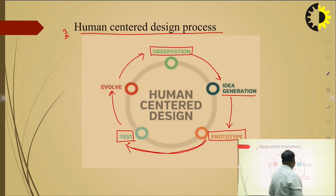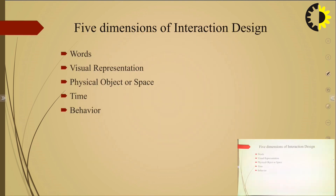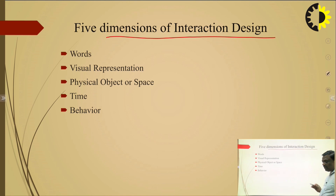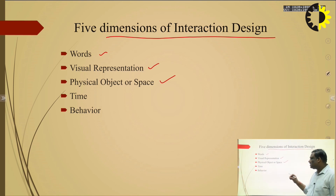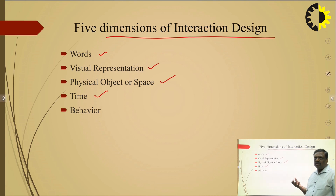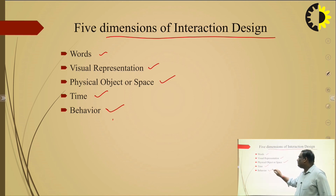These are the main processes of interaction design. Next is the dimension of interaction design — we have five dimensions: Words (visual text), Visual Representation, Physical Objects or Space, Time, and Behavior. Words means text, such as mouse, finger, or any physical input. Time involves some sounds or media changes. When we click a submit button, a sound appears, and behavior is the feedback between the user and product.